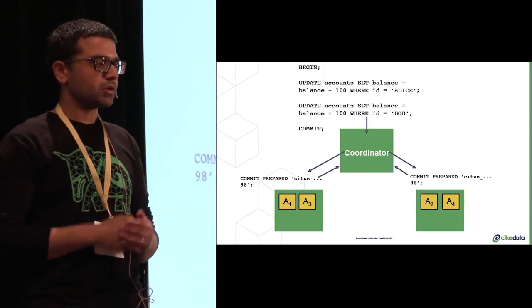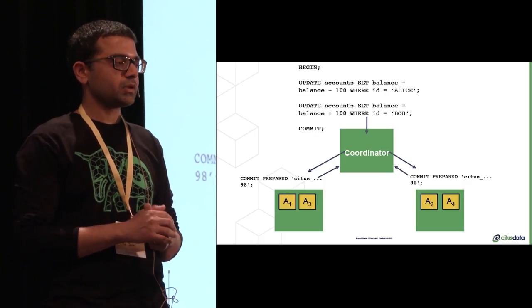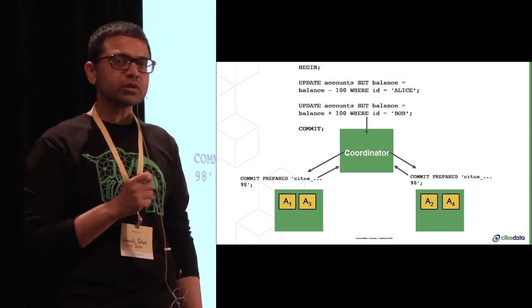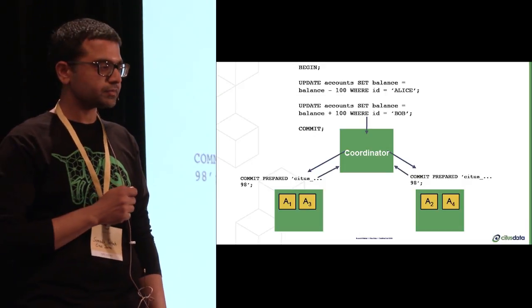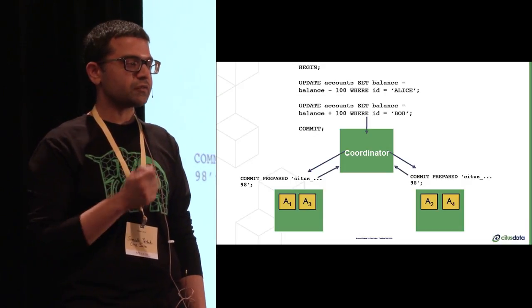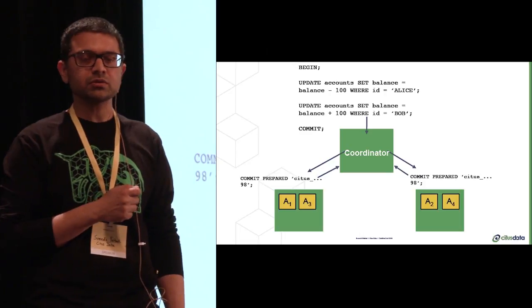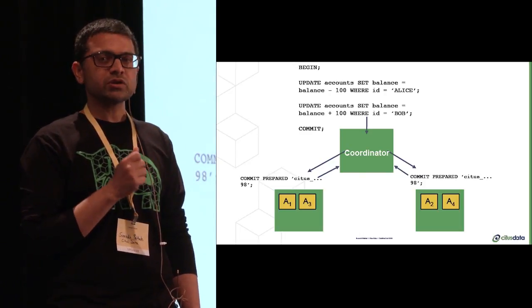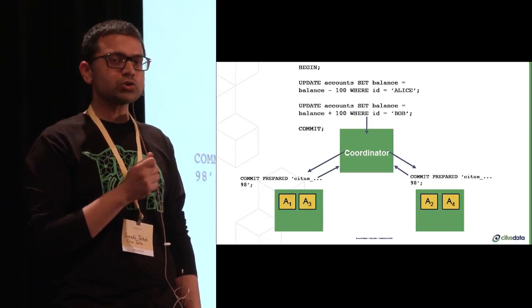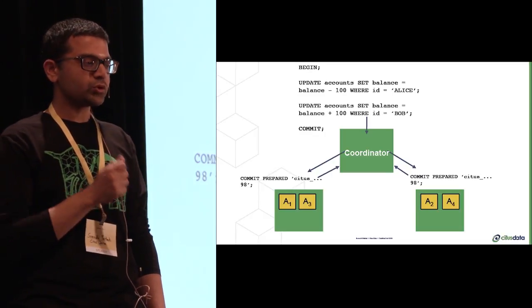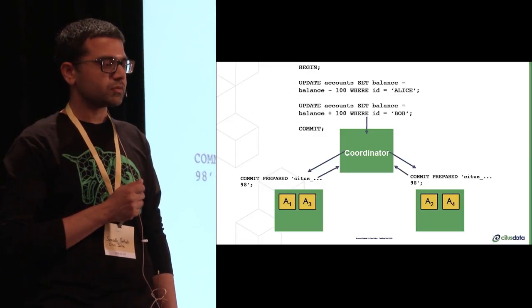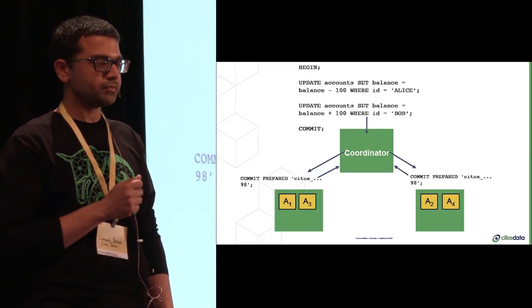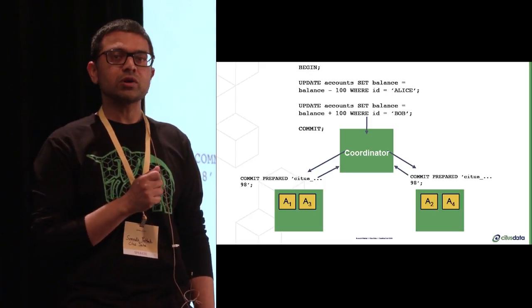But assuming no failures, we've committed the transaction on every node. Essentially, with two-phase commit, we guarantee the transaction will either succeed on every node or fail on every node. 2PC allows us to handle failures while preserving the atomicity of transactions. And by building a distributed relational database where each node itself is a database, the nodes can handle concurrent modifications and correctly enforce constraints so that we cannot overspend. And Postgres does this actually by taking row-level locks.